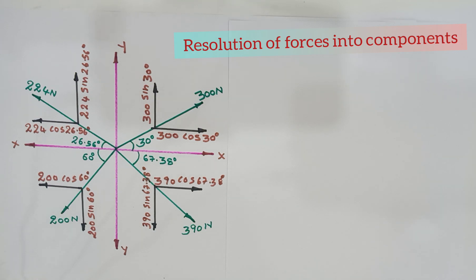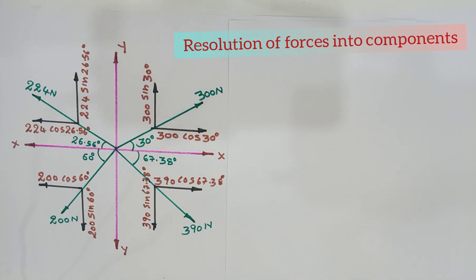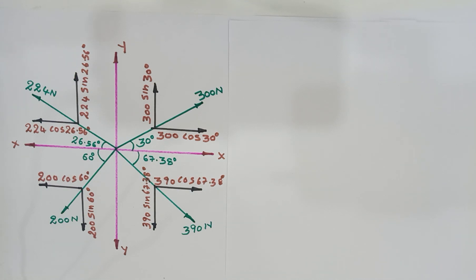Now we will find the summation of horizontal components and the summation of vertical components. For horizontal components, rightward direction is taken as positive and leftward direction as negative. For vertical components, upward direction is positive and downward direction is negative.